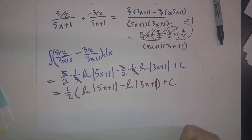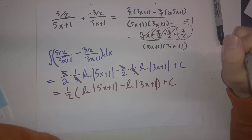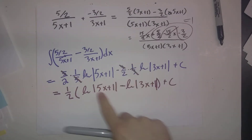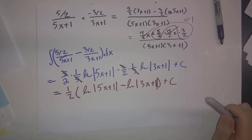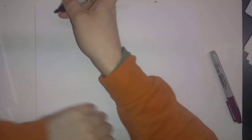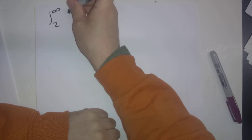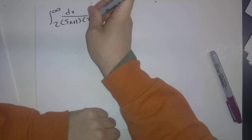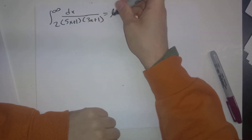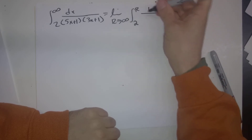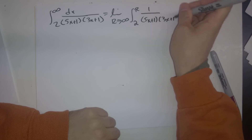Now we need to set up the improper integral properly. The integral from 2 to infinity of dx/[(5x+1)(3x+1)] equals the limit as r→∞ of the integral from 2 to r of 1/[(5x+1)(3x+1)] dx. Plugging in our antiderivative, this is the limit as r→∞ of (1/2)[ln|5x+1| − ln|3x+1|] evaluated from 2 to r.